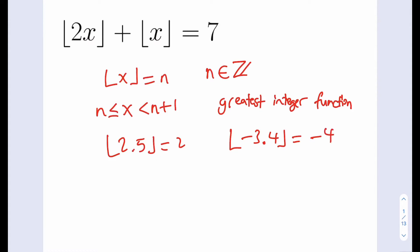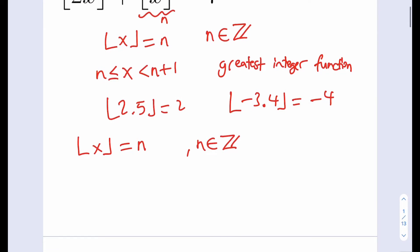Now let's go ahead and see how we can solve this problem. We're going to use substitution here. So I'll set the floor value of x equal to n, where n is an integer. This gives us the first inequality: x is between n and n plus 1. x can equal n because if x is an integer, the floor value is just itself. But it must be less than n plus 1.